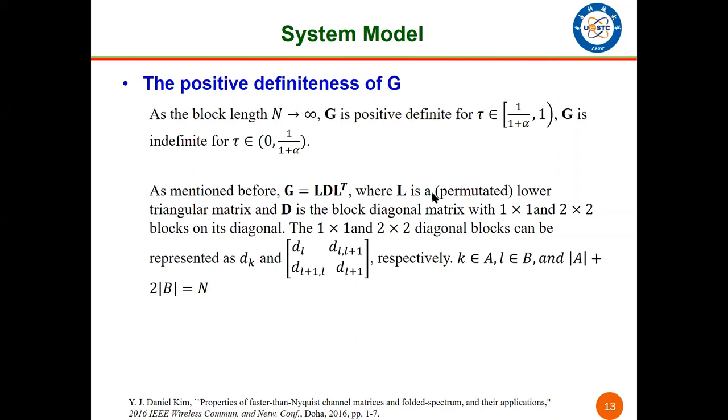As mentioned before, G equals LDL^T, where L is maybe a permuted lower triangular matrix and D is a block diagonal matrix with 1 by 1 and 2 by 2 blocks on its diagonal. The 1 by 1 and 2 by 2 diagonal blocks can be represented by d_k and 2 by 2 matrix respectively. And the indices k is in the set of A and l is in the set of B. And it's obvious that the cardinality of A plus double cardinality of B equals N.